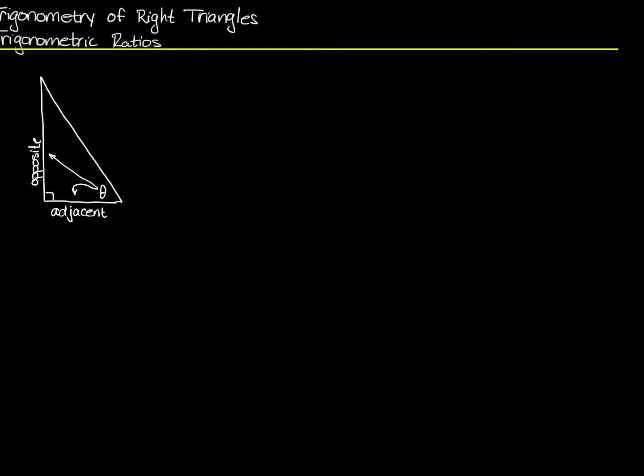And then there's this side here, and you could argue that this is next to theta also. But it's a very special side, because it's the only side opposite the right angle. And so regardless of where theta is, the side opposite the right angle we call the hypotenuse.